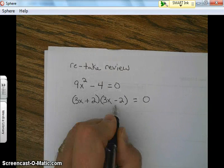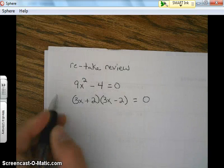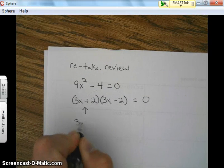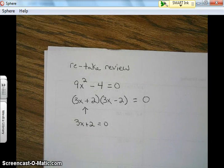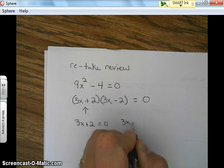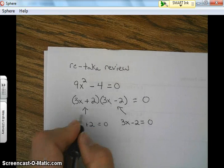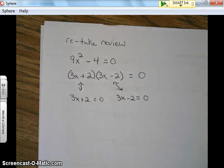The next thing, we want to set each factor equal to zero. So remember, we're going to take the first factor, set it equal to zero. Take the second factor, set it equal to zero. All right, we're almost done.